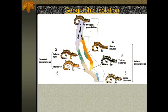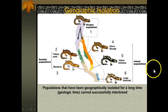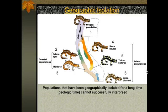The example we saw of the salamanders is an example of geographic isolation. Our Oregon population was the founding population — we know this by DNA evidence — and they have gradually migrated down either coast of the Sierra Nevada. So populations three and six have been isolated from each other for the longest period of time. One population went down the eastern coast of the Sierra Nevada, and one went down the western coast.